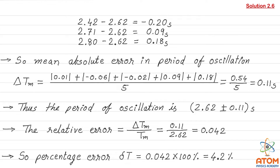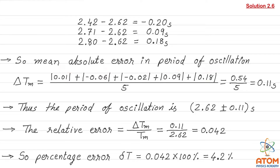The mean absolute error ΔTm is calculated by taking the absolute values of all deviations: |0.01| + |−0.06| + |−0.20| + |0.09| + |0.18| = 0.54, divided by 5. That gives 0.11 seconds. So the average absolute error is 0.11 seconds, and the period of oscillation is written as 2.62 ± 0.11 seconds.